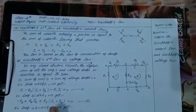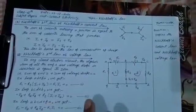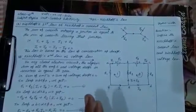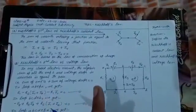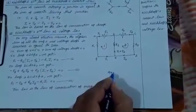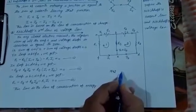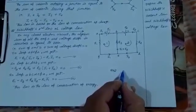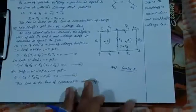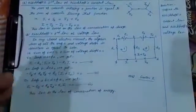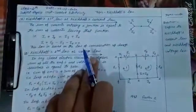Good morning students. In the last topic we discussed about the grouping of cells. Our next topic is Kirchhoff's Law. In 1842, a German physicist named Gustav Kirchhoff gave two laws to solve complex circuits, named Kirchhoff's Current Law and Kirchhoff's Voltage Law.